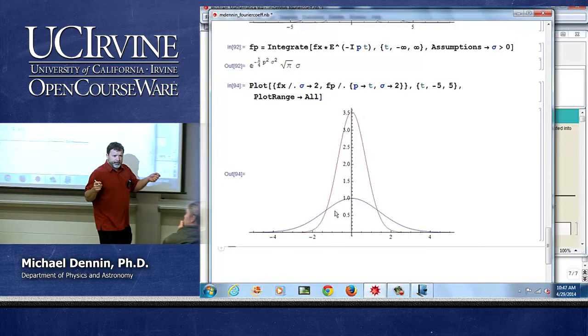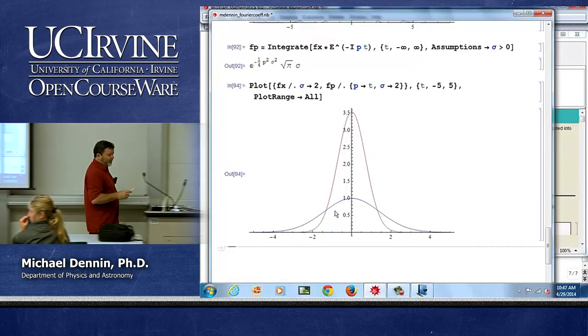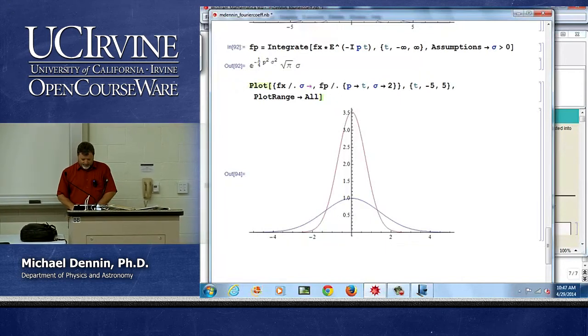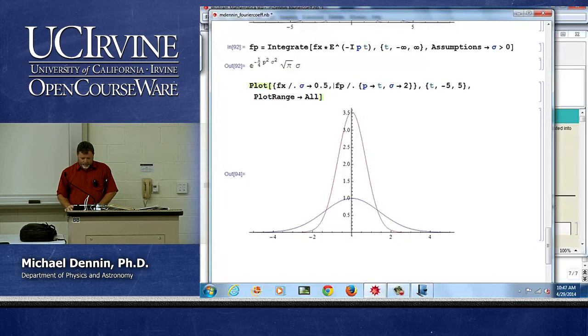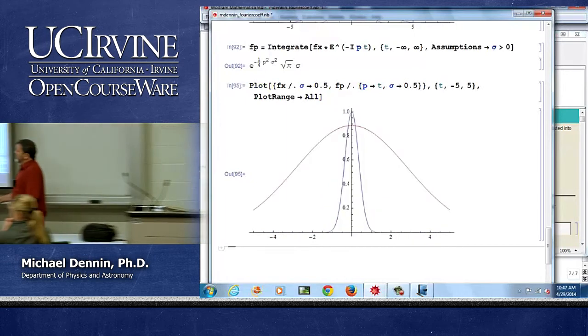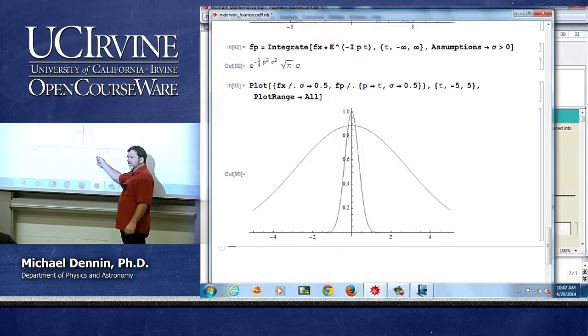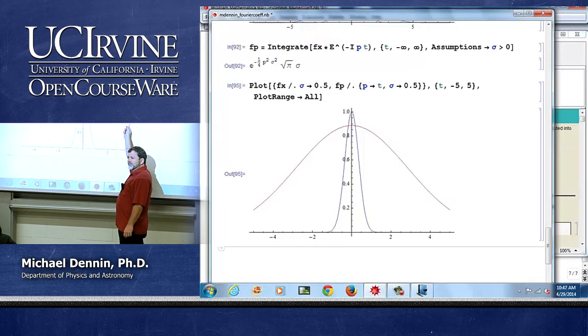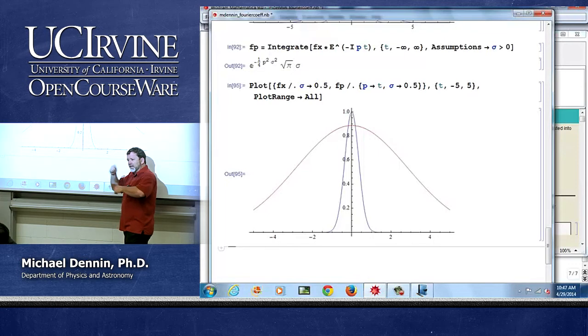This state has a lot of positional width, but not as much p width. The more your uncertainty in position, the less your uncertainty in momentum. So I could go the other way. I could make my position more narrow, because sigma is fundamentally that width of position. So this is the position width, and now the momentum width got wider.